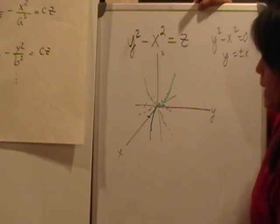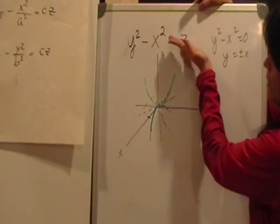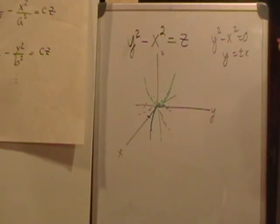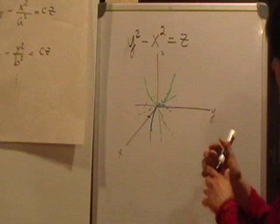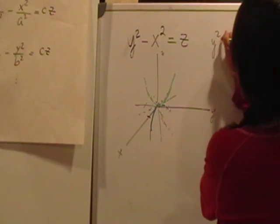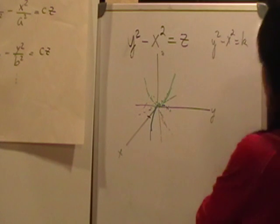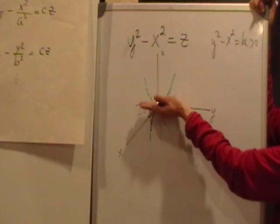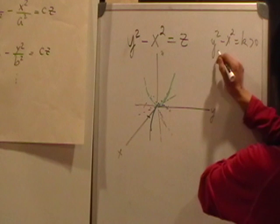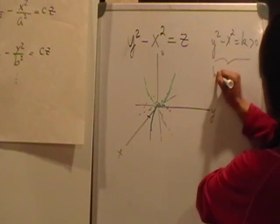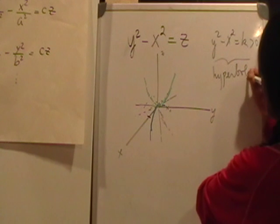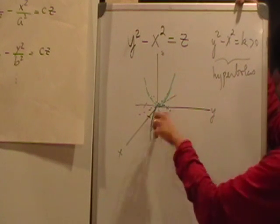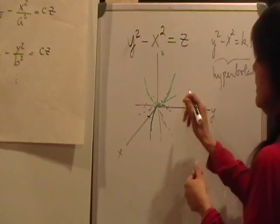Let's see what happens as we move up the z-axis. We replace z with k, giving y squared minus x squared equals k. For k greater than zero, we recognize this form as hyperbolas, with vertices sitting on the y-axis.